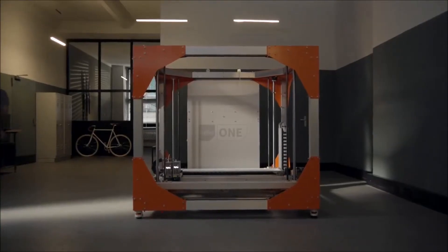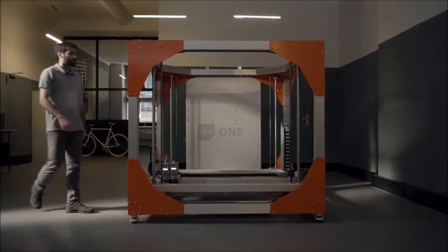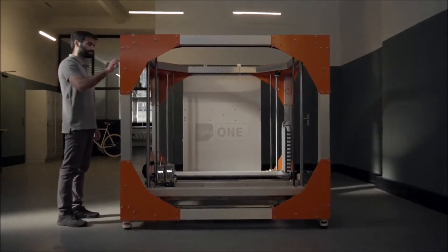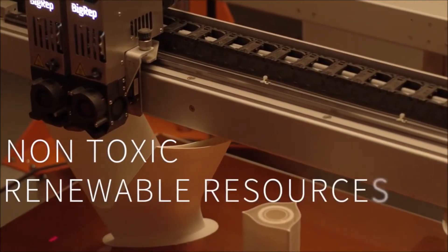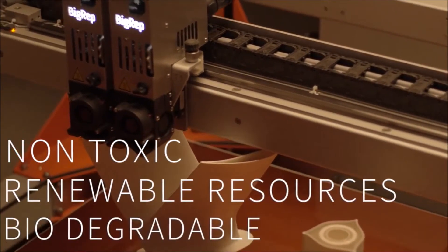The Pro-HT can be used as an ABS alternative for room-temperature printers. However, unlike ABS, the Pro-HT is completely non-toxic, derived from renewable resources, and is fully biodegradable.